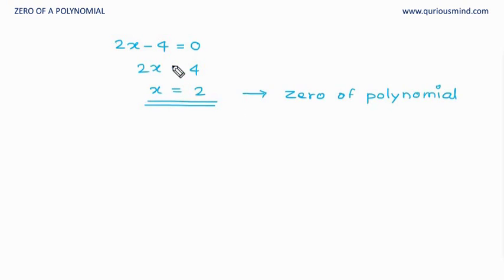So we can find the 0 of the polynomial by equating the polynomial to 0 and finding the value of the variable and that value of the variable is 0 of that polynomial. This is also called a root of the polynomial or it is also called the solution of the polynomial equation. So root, solution, 0, these are interchangeably used words for 0 of the polynomial.